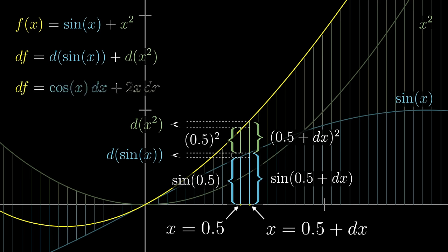Now we know that the derivative of sine is cosine, and remember what that means: it means that this little change d sine of x is about cosine of x times dx. It's proportional to the size of our initial nudge dx, and the proportionality constant equals cosine of whatever input we happen to start at. Likewise, because the derivative of x squared is 2x, the change in the height of the x squared graph is going to be about 2 times x times whatever dx was.